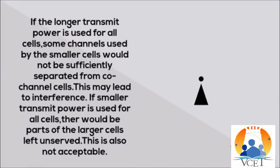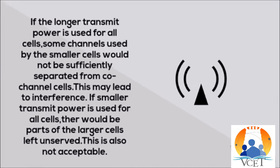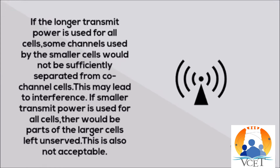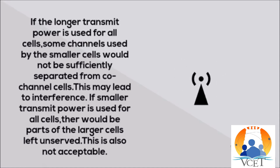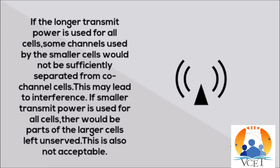If the larger transmitter power is used for all cells, some channels used by the smaller cells would not be sufficiently separated from co-channel cells, which may lead to interference. If the smaller transmitter power is used for all cells, there would be coverage gaps in the larger cell area. Neither scenario is acceptable.